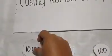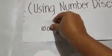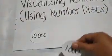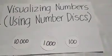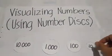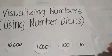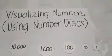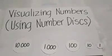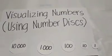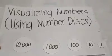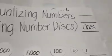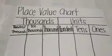We have 10,000, we have 1,000, 100, 10, and 1. But before we proceed to visualizing numbers using number disks, it is important that you have to review first your place value chart.